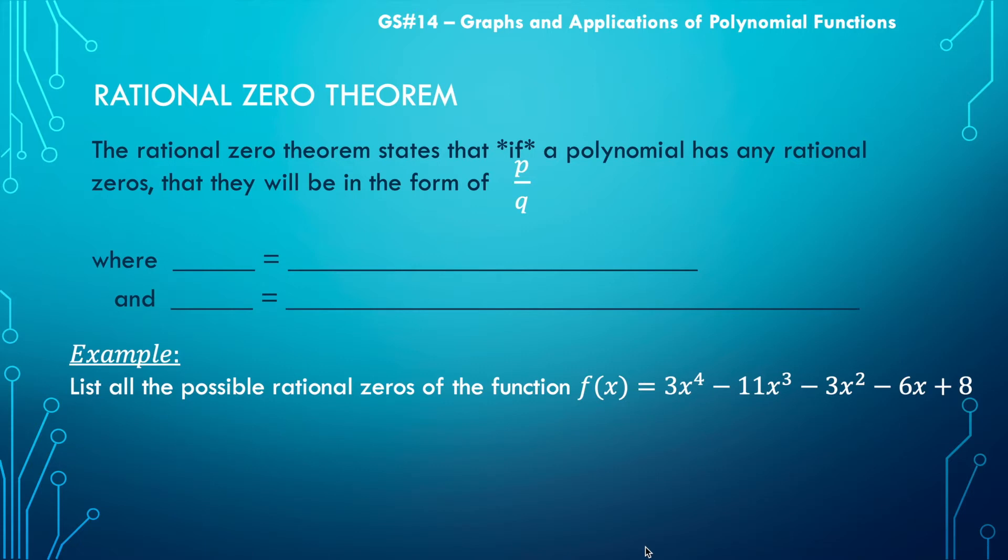Now, why we use P and Q, I'm not really sure, but P will represent a factor of the constant that is in the polynomial. And Q will be a factor of the leading coefficient.